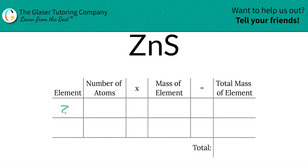So the first step of the process is to write down the elements we see, so zinc and sulfur. Next is to identify the number of atoms — that's where the subscripts come into play. If there is no subscript, just put in a one. So there's one zinc, one sulfur.